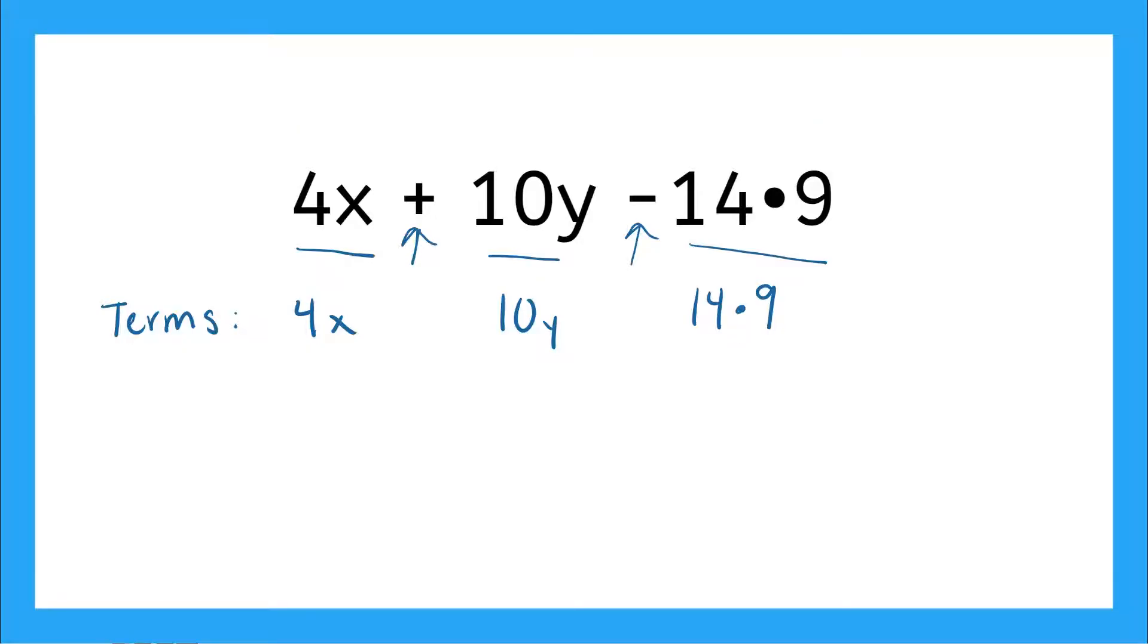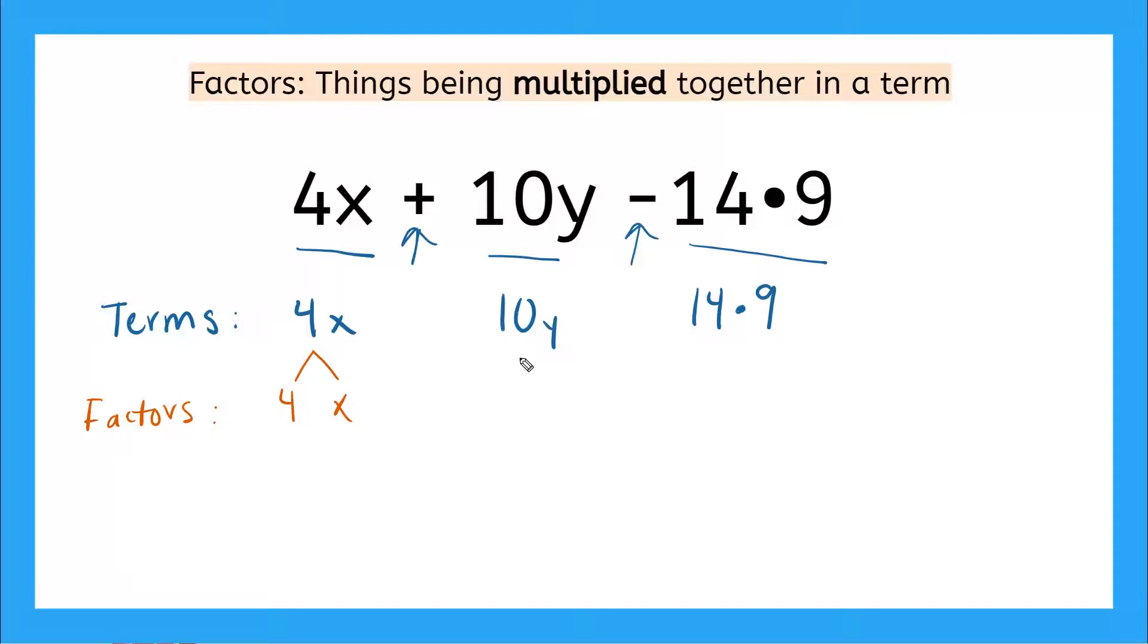Now let's talk about factors. The factors are the things being multiplied together in each term. So let's look at our first term. What is our first term? Yeah, our first term is right here, 4x. So what is being multiplied together in the first term? 4 and x. So if we write our factors here, we're going to go through each of our terms.